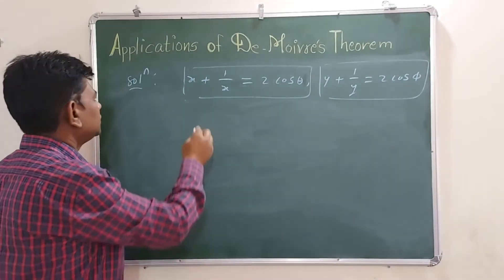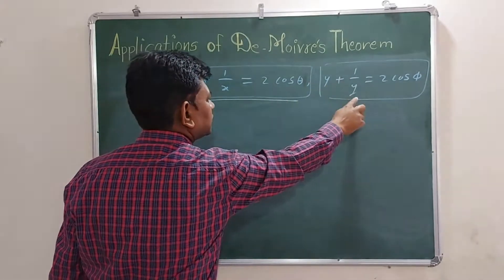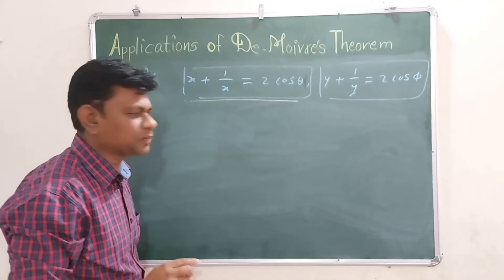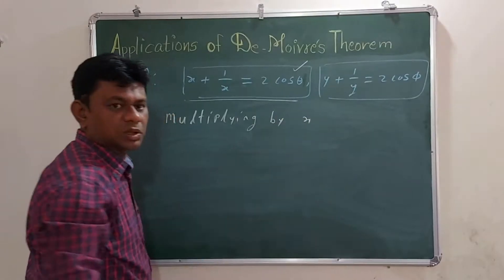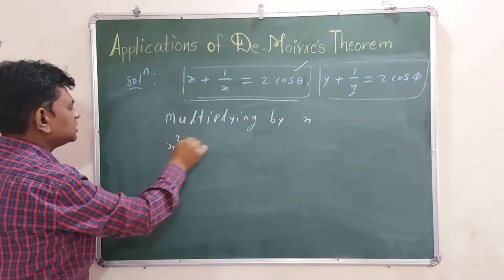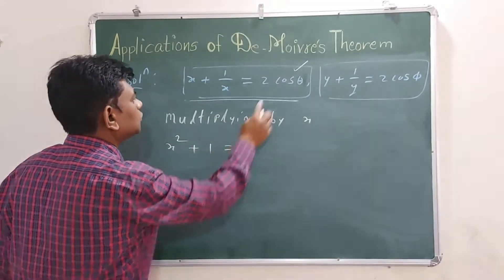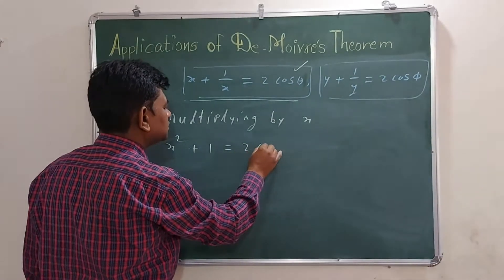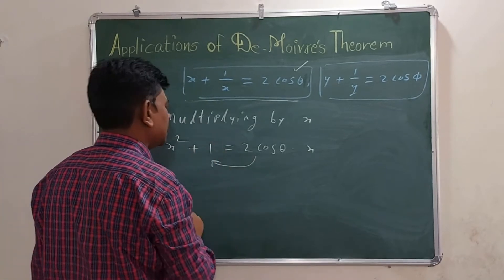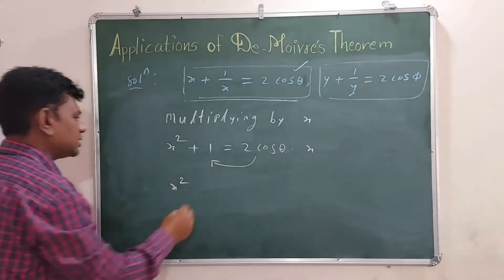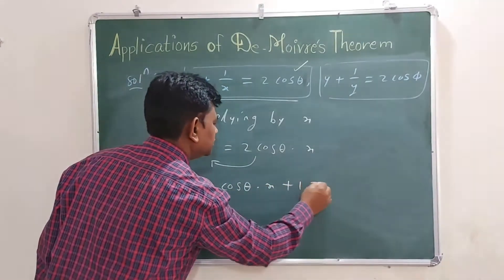Now for the solution. Given x plus 1 by x is equal to 2 cos theta, and similarly y plus 1 by y is equal to 2 cos phi. Multiplying the first equation by x, we get x squared plus 1 equals 2 cos theta times x. Writing 2 cos theta on the left-hand side, we get x squared minus 2 cos theta times x plus 1 is equal to 0. This is a quadratic equation in x.